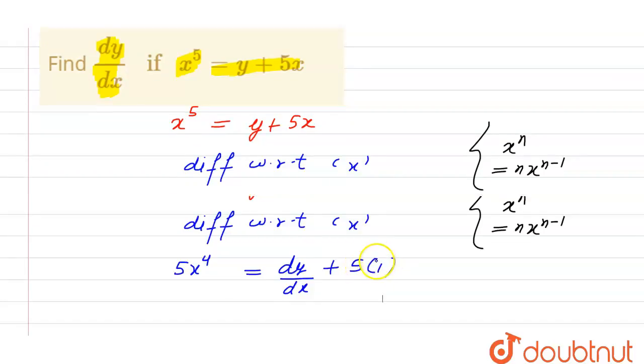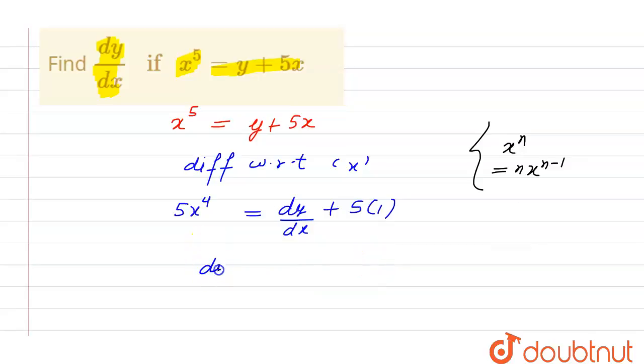So the value of dy divided by dx is equal to 5x raised to the power 4 minus 5. We can take 5 common from this, so we will remain with 5 times x raised to the power 4 minus 1.